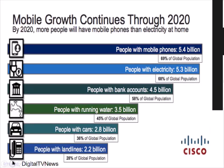Mobile growth is continuing through 2020: 5.4 billion people with mobile phones; people with electricity, 5.3 billion — so people even without electricity have phones; people with bank accounts, 4.5 billion; people with running water, 3.5 billion; people with cars, 2.8 billion; people with landlines, 2.2 billion. The era of the landline is going the way of the dinosaurs. Mobile devices are taking over — they are far more than any phone.